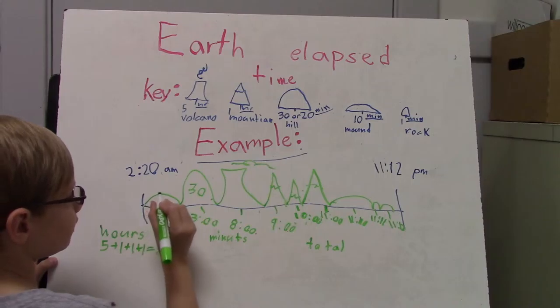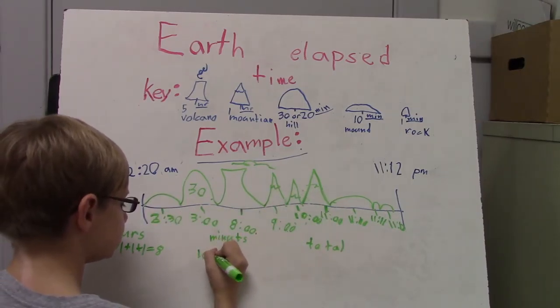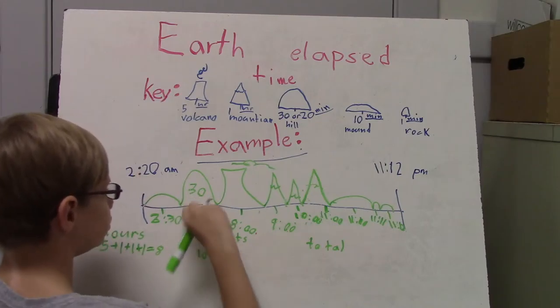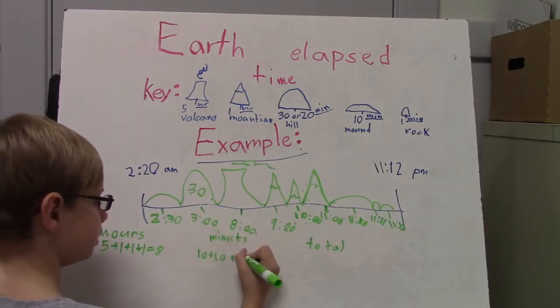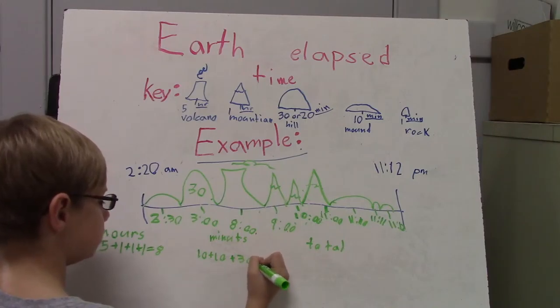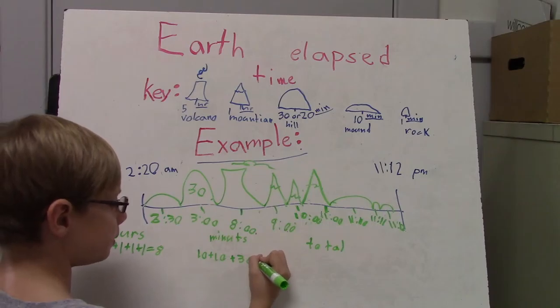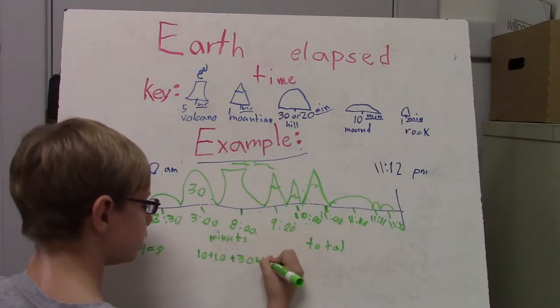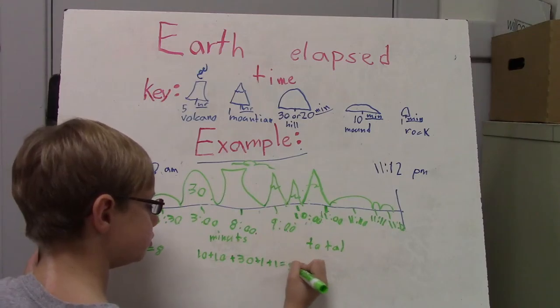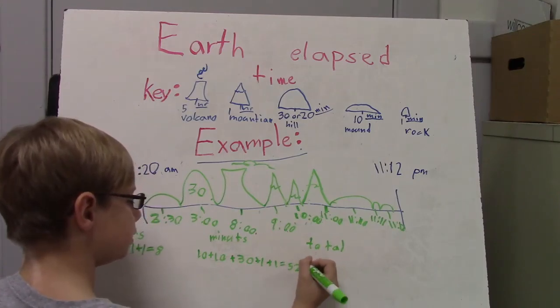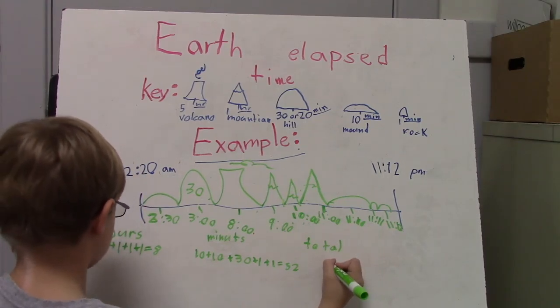For minutes, we have 10 plus 10 because there's two mounds, and then plus 30 because of the hill, and then plus one plus four equals 52 minutes. And then the total is 8 hours.